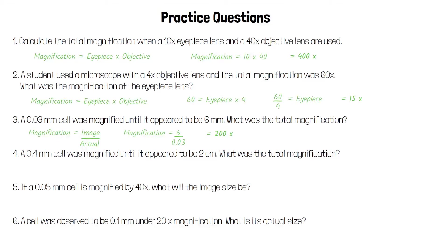We use that same equation for the next question: magnification equals image over actual. This time we've got the actual size in millimetres and the image size in centimetres, so we need to convert those centimetres into millimetres so that the units are the same. You could convert them both into centimetres — it doesn't matter as long as the units are the same. 2 centimetres is 20 millimetres, so the image size is 20 mm and the actual size is 0.4 mm. 20 over 0.4 gives us a magnification of 50 times.